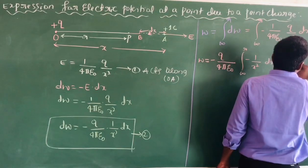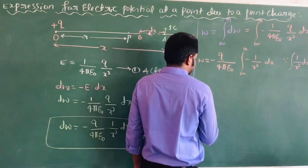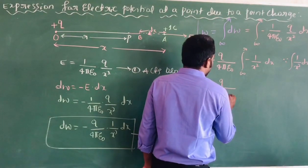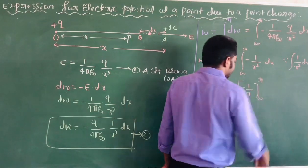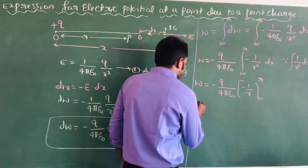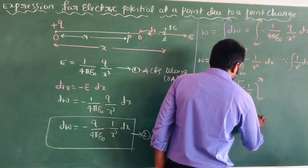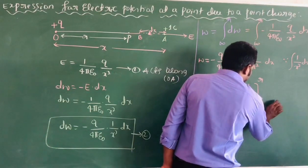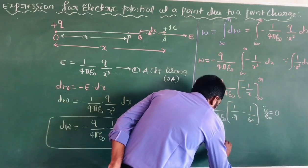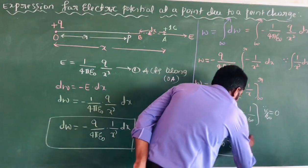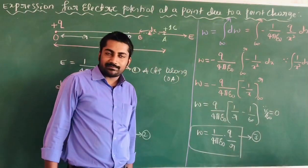We know the formula: ∫(1/X²)·DX = −1/X. Therefore, work done W = −Q/(4πε₀) × [−1/X] evaluated from infinity to R. Substituting these values, we get W = Q/(4πε₀) × (1/R − 1/∞). Since 1/∞ = 0, we get W = 1/(4πε₀) × Q/R. This is the expression for work done.